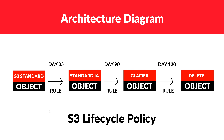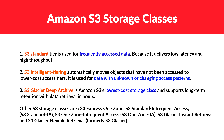In the architecture diagram, first is S3 Standard. After 35 days, we can create a rule where it moves to Standard Infrequent Access. The further right you go, the cheaper the option. There are many variations of Glacier — Glacier Instant Retrieval, S3 Glacier Flexible Retrieval, and Glacier Deep Archive. Just remember: whenever you see the term Glacier, think of cold storage.